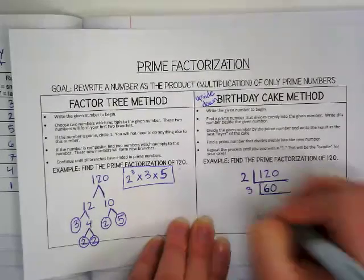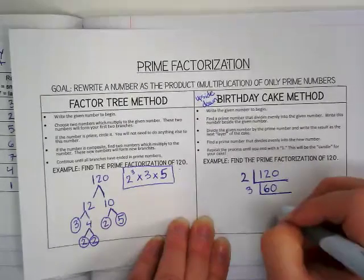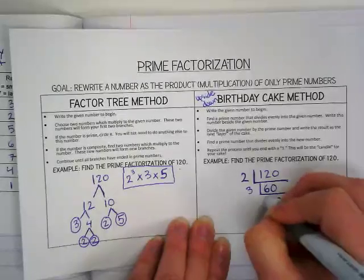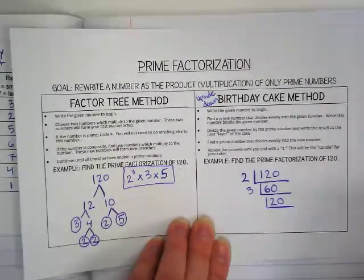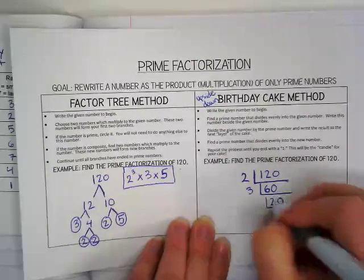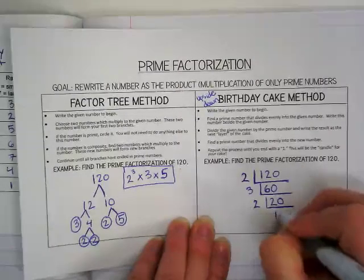So we'll write down 20. Here's our next layer. You start to see the birthday cake. I'm going to divide by 2 again, so we get 10.